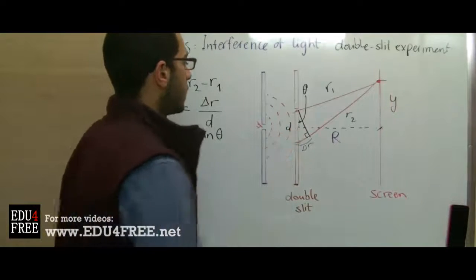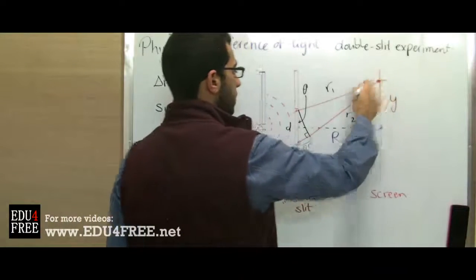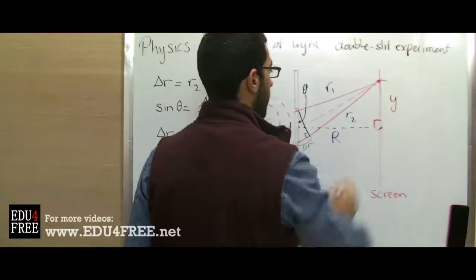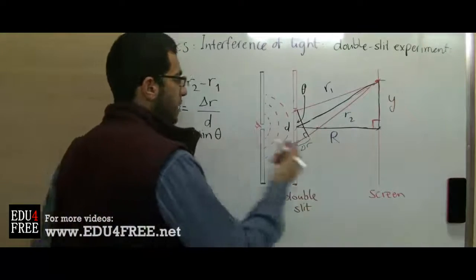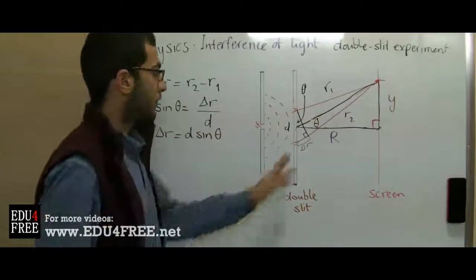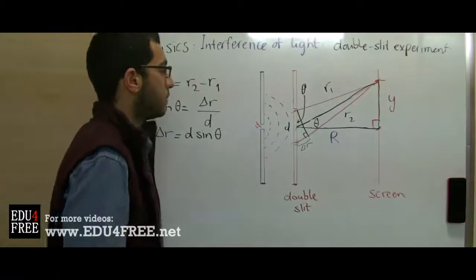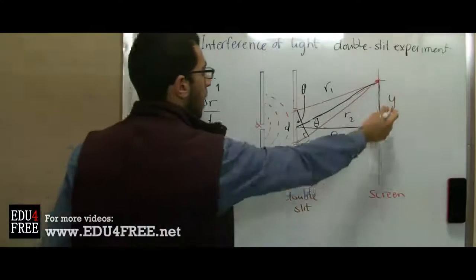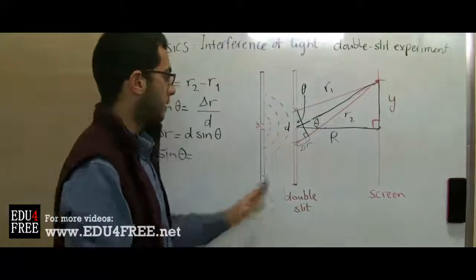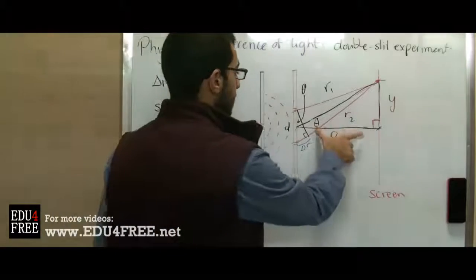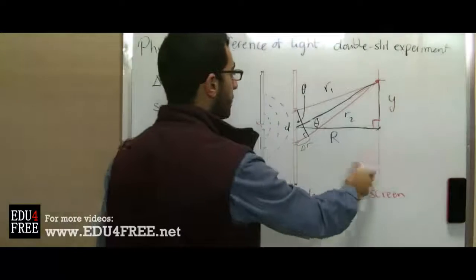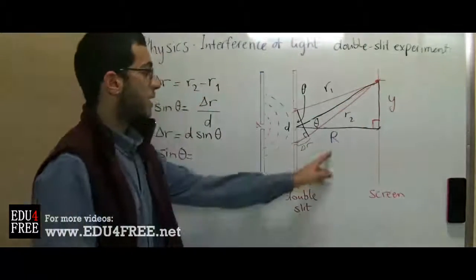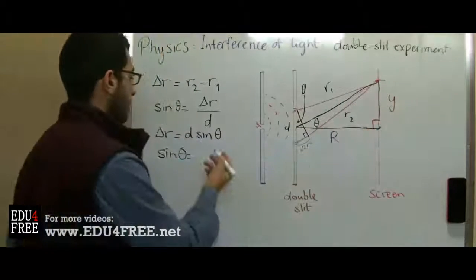If we draw a line from the middle point of d connecting to the point of intersection of the two rays, we have another right angle triangle. In this triangle, this is the angle theta — the same inclination angle as before. And sin theta here equals y over the hypotenuse. However, since theta is always very small in this experiment, the distance R between the double slit and the screen is approximately equal to the hypotenuse. So instead of y over the hypotenuse, we write y over R.